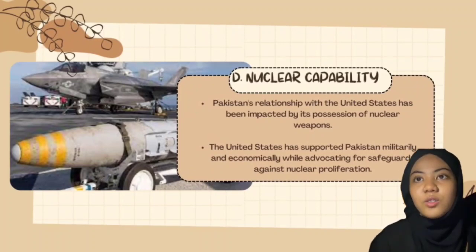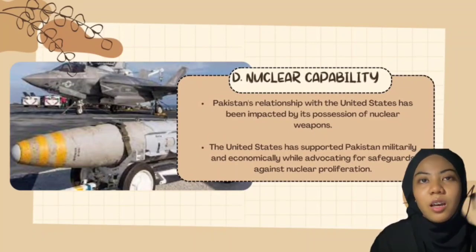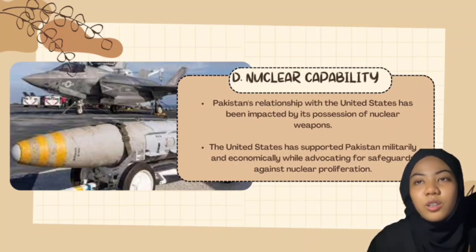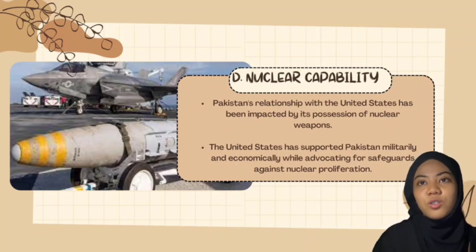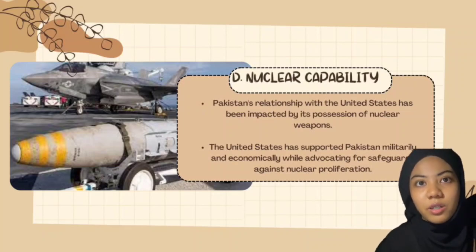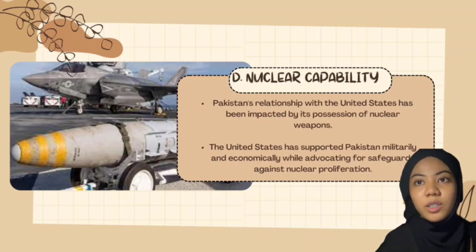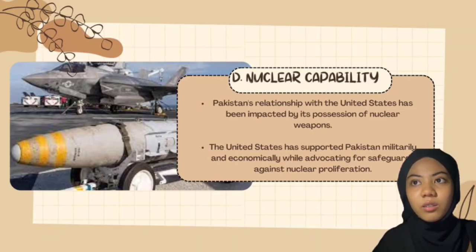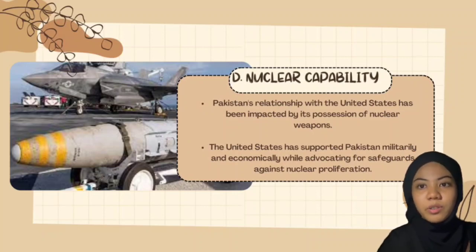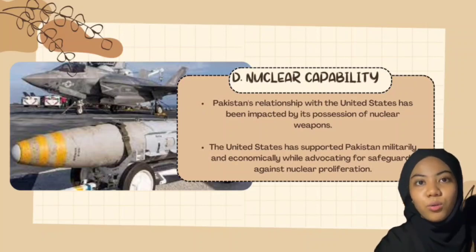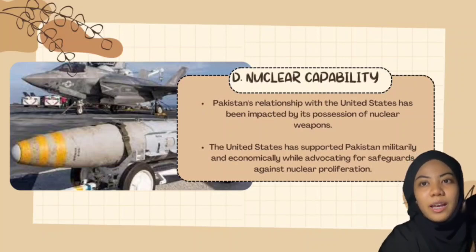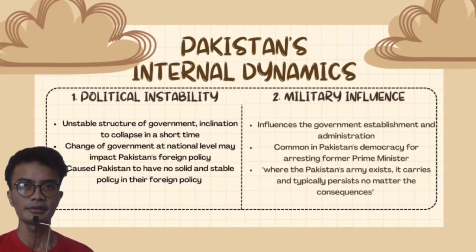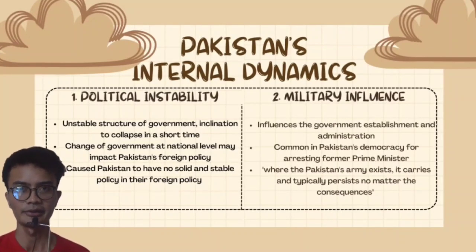Pakistan's possession of nuclear weapons has impacted its relationship with the United States. Despite reservations about Pakistan's nuclear program, the United States recognizes the importance of a stable relationship to support regional stability and counter-terrorism efforts. The United States has provided military and economic assistance to Pakistan while advocating for non-proliferation measures and safeguards. This support aims to ensure the security and responsible management of Pakistan's nuclear arsenal. In conclusion, Pakistan's nuclear weapons program has significant implications for regional stability and international relations.